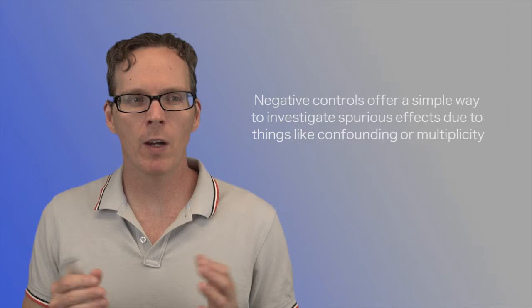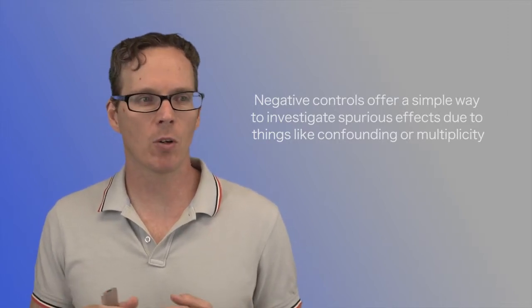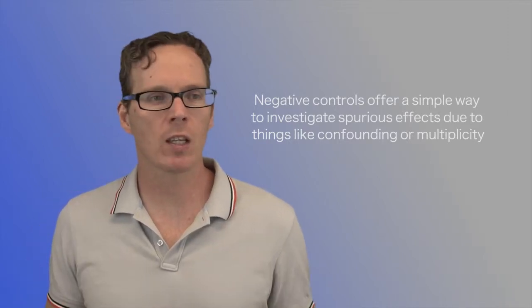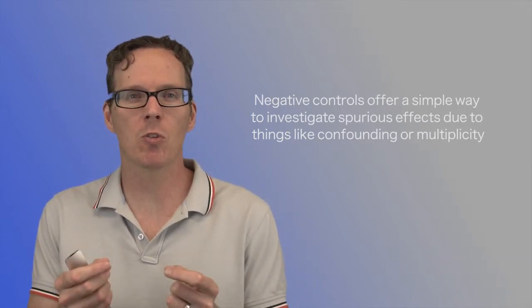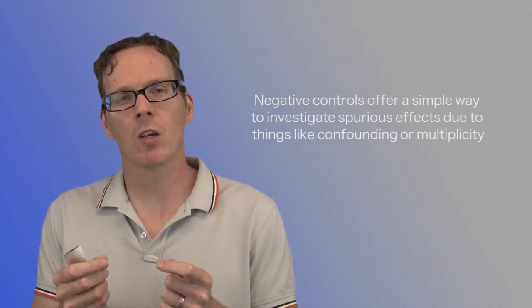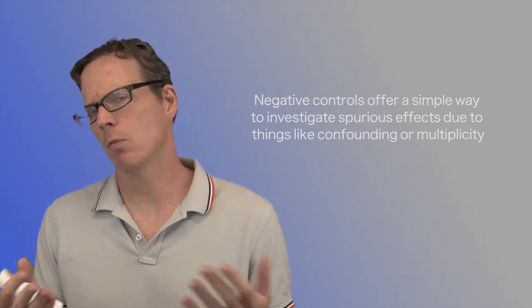However, what these researchers did is they said, okay, well, let's just study the process by looking at an instance where we know there can't be an effect, but in every other sense, we've replicated the analysis in exactly the same way, and they found an effect. So these kinds of negative controls offer a very simple way to investigate spurious effects due to things like confounding or multiplicity. In this case, it was confounding. The correlation between these two voxels was actually confounded by head motion, for example.